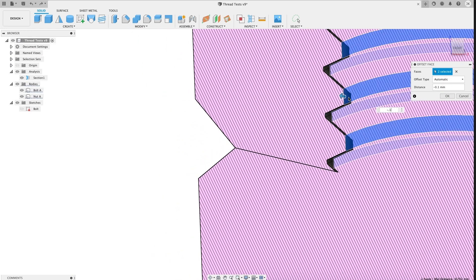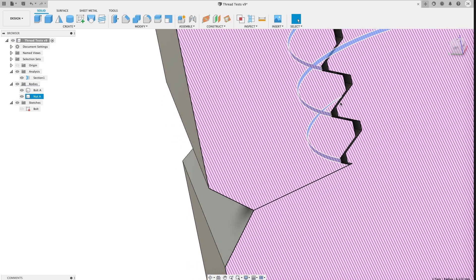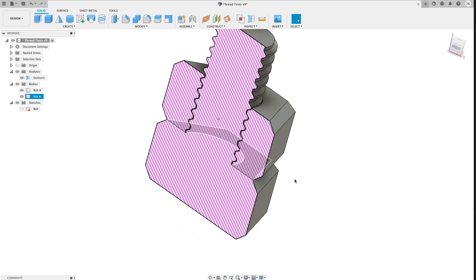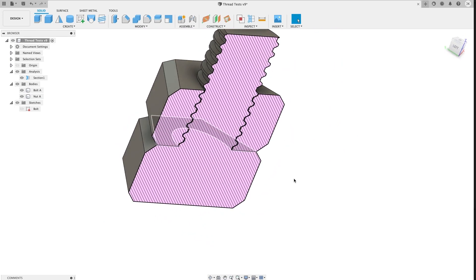Let's use the press pull tool to blunt the peaks and troughs just a bit. 0.1 to 0.2 millimeters should do it. This removes the thinnest parts of the thread, which I find to be the least reliable when printing. And this is normally where I'd stop.